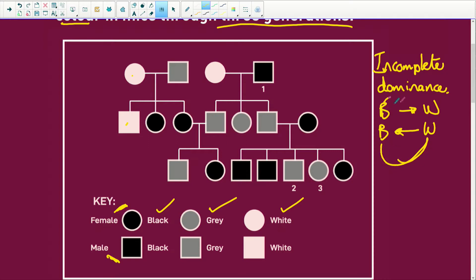What happens is they end up making a mixture. So if I have black times white, black times white, I'm going to end up with grey. If I have red times white, I'm going to end up with pink. Okay, that's incomplete dominance.